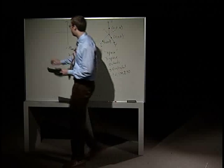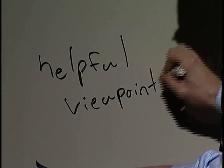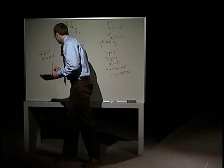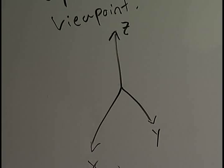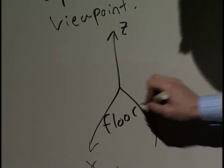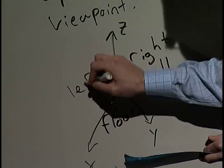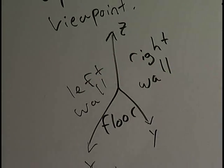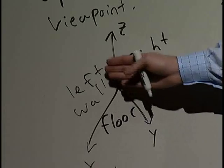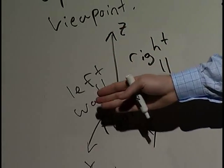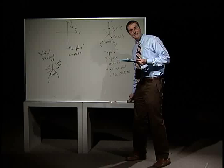A helpful viewpoint: if it's still not quite clear what's going on, think about it like this. Here's the floor of some room, and over here we have a right wall and a left wall. The floor meets the corner of the wall, the wall extends up, the floor lays flat, and the walls extend perpendicular to the floor along the axes. That's one way to view the first octant. Hopefully this is clearer now. Let's look at an example of how to graph an equation in space.